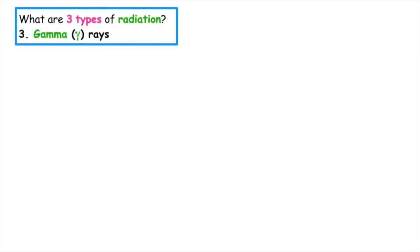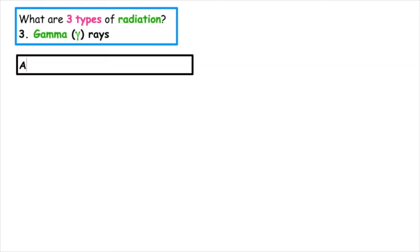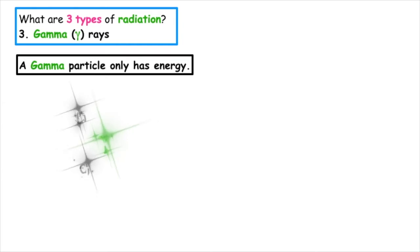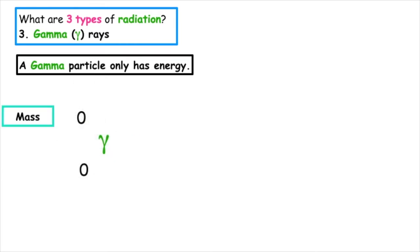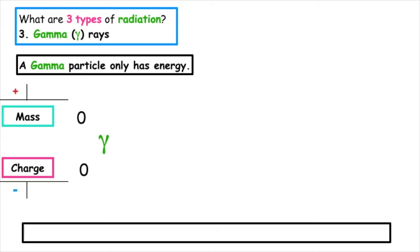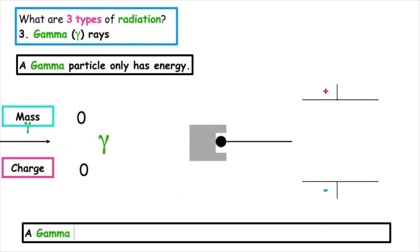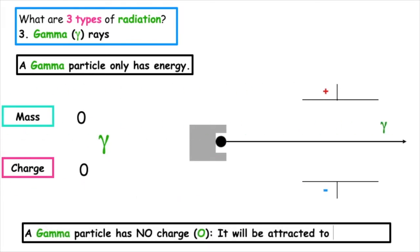The third type of radiation is gamma rays. A gamma particle has only energy — it has no mass and no charge. Because a gamma particle has no charge, it will not be attracted to any plates when passed through an electric field.